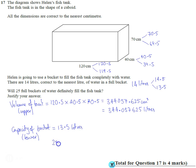If we do 25 times this, 25 buckets, we come out with 337.5 liters.